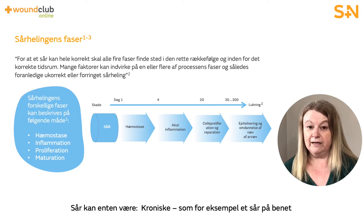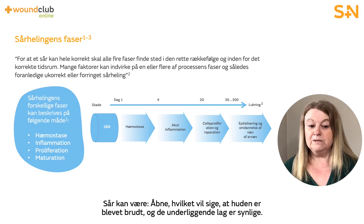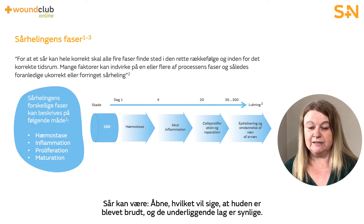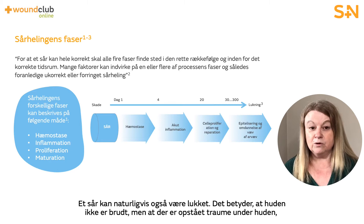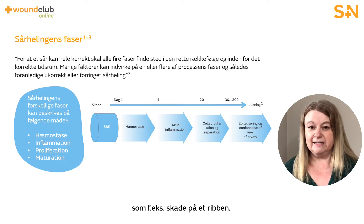Wounds can be either chronic — an example of this could be a leg ulcer — or acute, which could be due to trauma. Wounds can be open, in which the skin has been compromised and underlying tissues are exposed. And wounds can be closed, in which the skin has not been compromised but trauma to underlying structures has occurred — an example of this is a bruised rib.